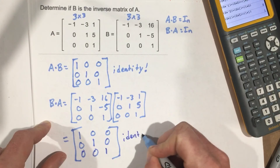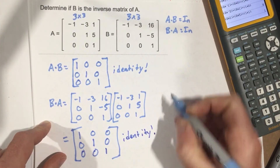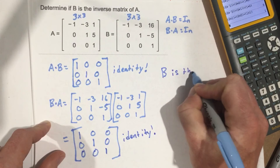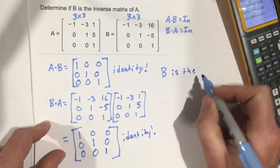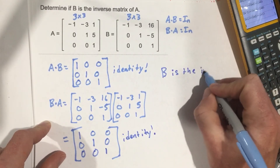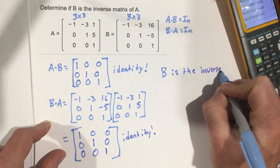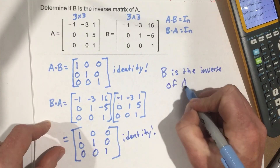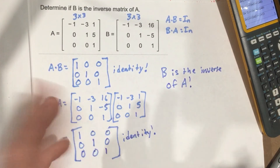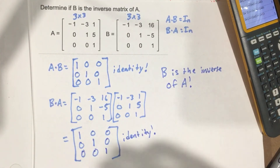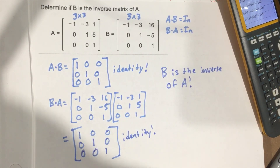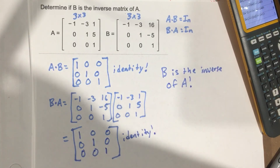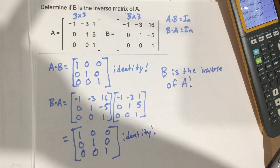What does it mean? B is the inverse of A. That's how you check to see if two matrices are inverses for 3 by 3s.